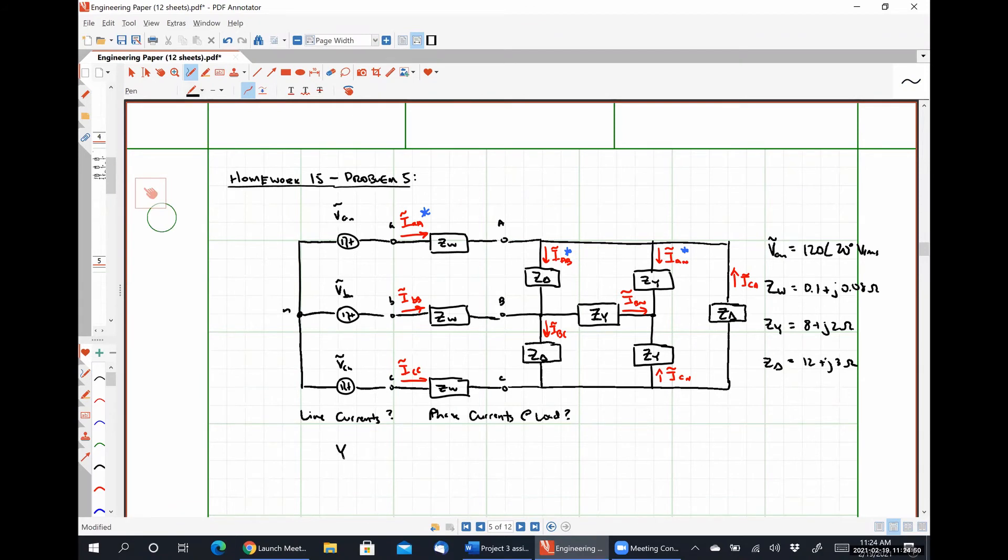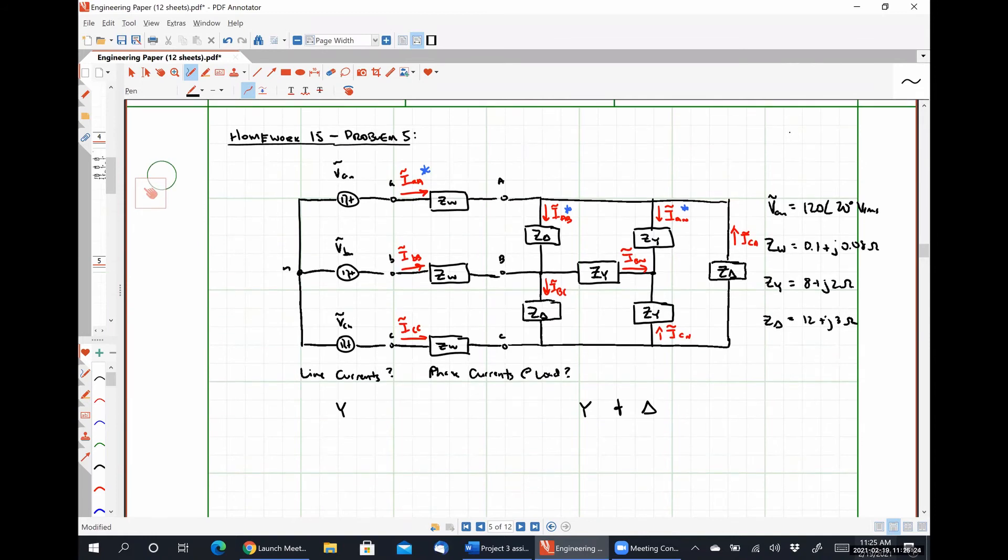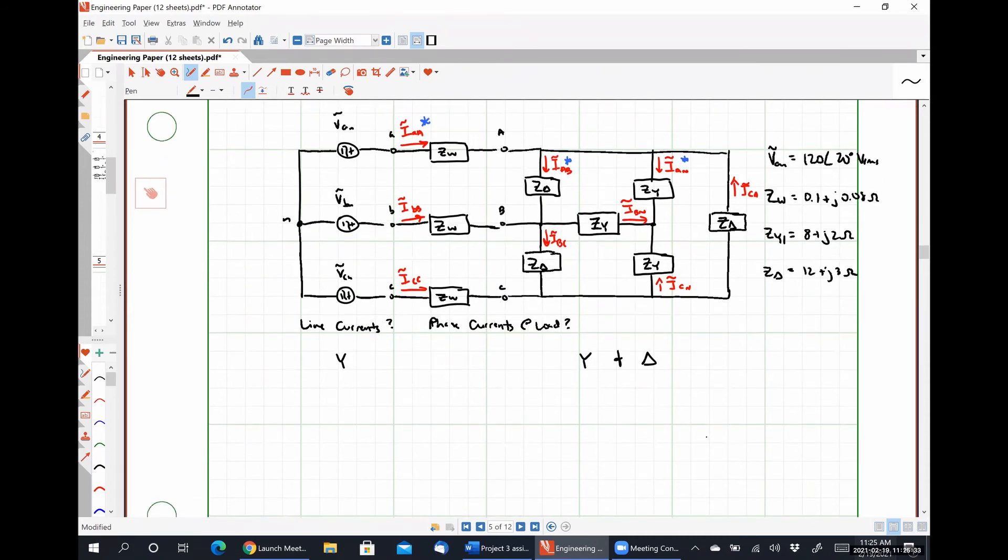So recall, on the source side over here, we have a Y connection. And on the load side over here, we have a Y and a delta connection. So our single phase equivalent circuit method requires that we have a Y-Y system. So what do we obviously need to do to the delta connected load? Convert the delta into Y. Yeah, right. So I'm going to call our original Y-load ZY1 from here on out so it doesn't get too confusing. And I'm going to say that ZY2 is simply Z delta over 3, which is going to be 12 over 3 is 4, plus J3 over 3 is 1, 4 plus J1 ohms.